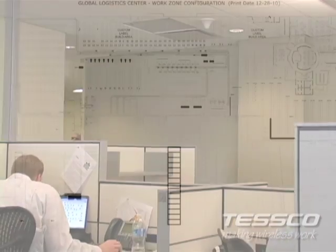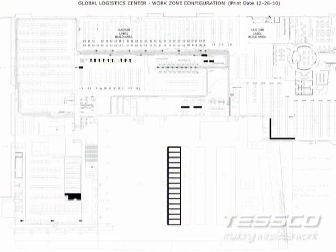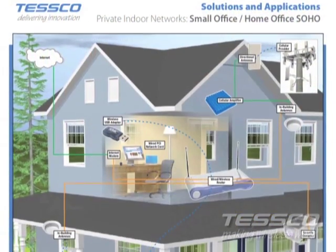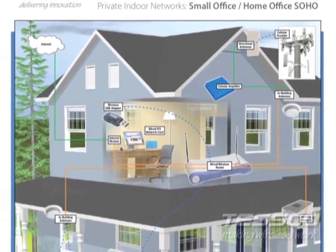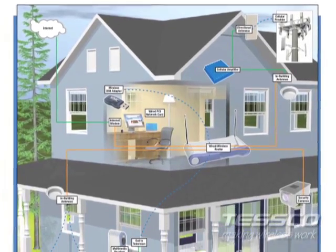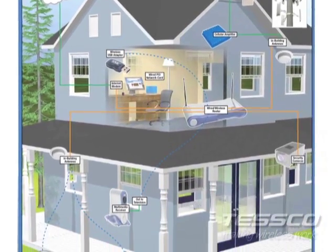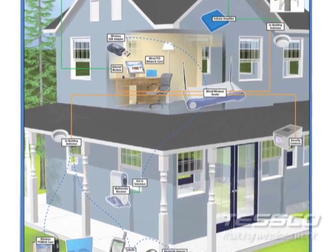Before any system can be implemented, a site survey needs to take place to assess the current wireless coverage. For home or small office plug-and-play type DAS solutions, your site survey could simply be walking through your house to determine which room has the best cellular coverage.